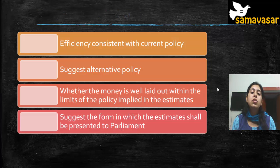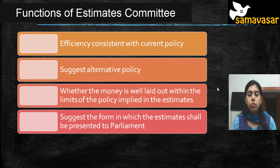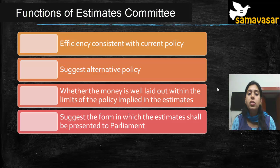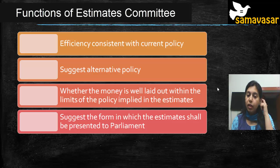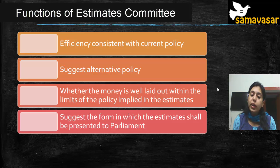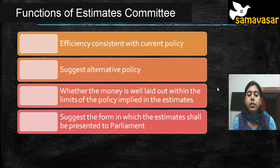The Estimates Committee recommends efficiencies consistent with current policy, suggesting more efficient ways of achieving the same policy goals. It can also suggest alternative policies. It checks whether money is well laid out within the limits of the policy implied in the estimates, and suggests the form in which estimates shall be presented to parliament — essentially the format — so it is easy for members of parliament to understand.